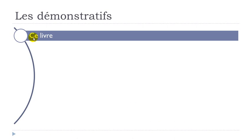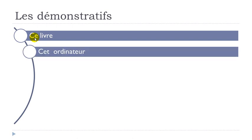One example: 'ce livre' — this book. Livre is masculine and doesn't start with a vowel sound, so it's the basic 'ce'. And then 'ordinateur' — computer — is a masculine word, but it starts with O, a vowel. So 'ce ordinateur' wouldn't be possible; we use the second option: 'cet ordinateur' — this computer.